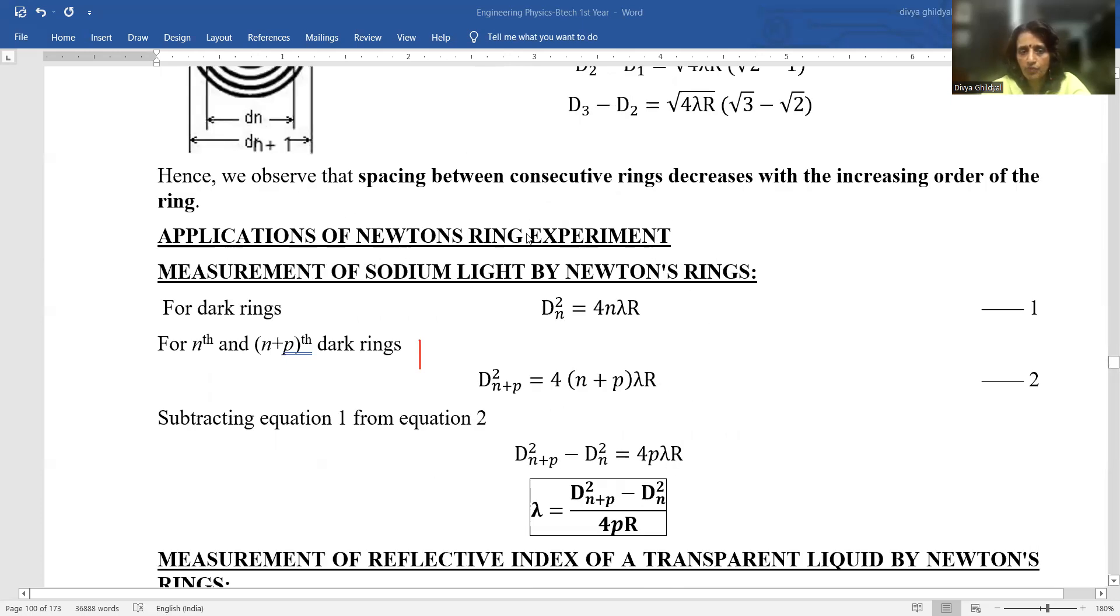What are the applications of Newton ring experiment? One application you are doing in the physics lab to find the wavelength of monochromatic source of light using Newton ring setup.